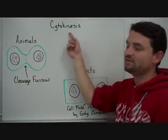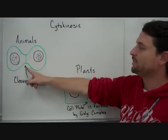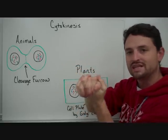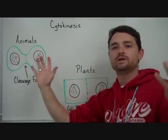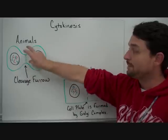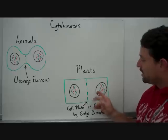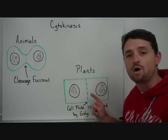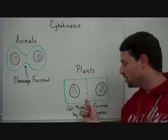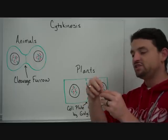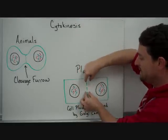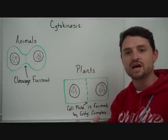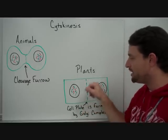Then the last step, cytokinesis takes place. In animals, cytokinesis takes place by what we call a cleavage furrow — protein bands condense and tighten until they completely squeeze the middle section, causing the cell membranes to separate into two cells. In plants, cell plates form in the middle because a plant cell has a cell wall. The Golgi complex forms these cell plates with a Golgi membrane around them, and they form across the width of the cell. Eventually that cell plate fuses together and becomes the cell wall, with the Golgi membrane becoming the new cell membrane.